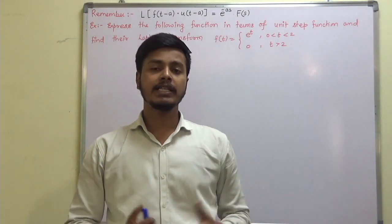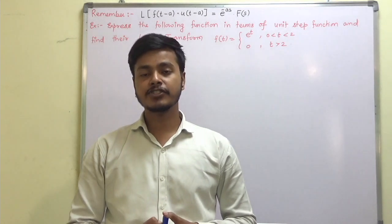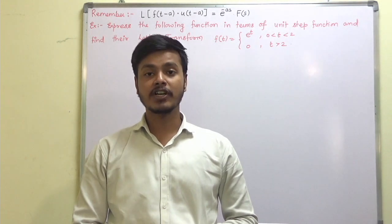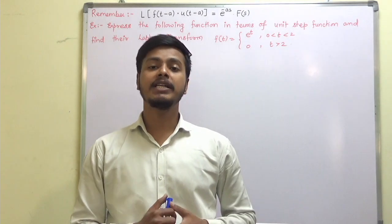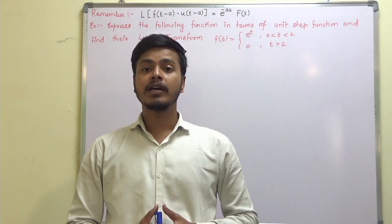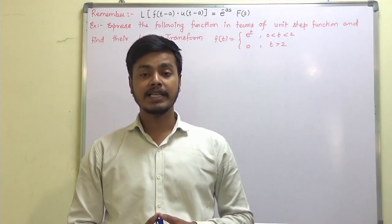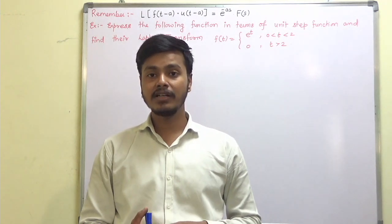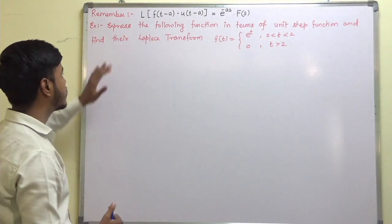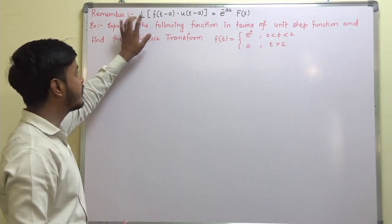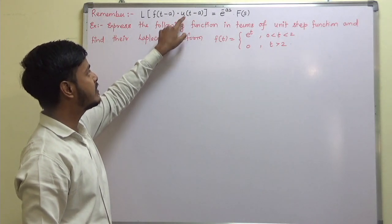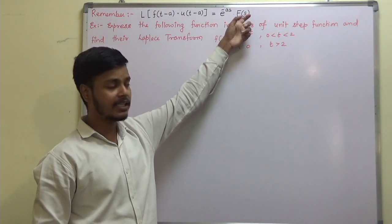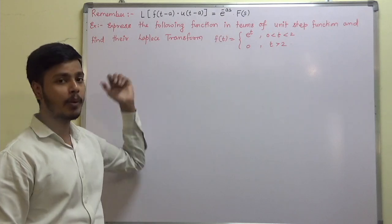Hello and welcome to this learning video. In the last learning video we saw what a unit step function and unit displacement function are, and also the important result: what happens to f(t) when a unit function is multiplied to it, and what happens to f(t - a) when multiplied by the unit displacement function. The result to remember is: the Laplace transform of f(t - a) · u(t - a) equals e^(-as) · F(s). This result will be handy in solving problems on unit step functions.